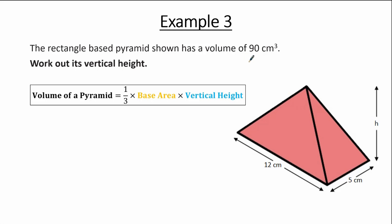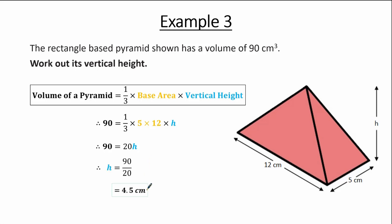Substituting these values, 90 equals one-third multiplied by 5 multiplied by 12 multiplied by h. Simplifying the right-hand side, we have 90 equals 20h. Dividing by 20, h equals 90 over 20, which equals 4.5 cm.